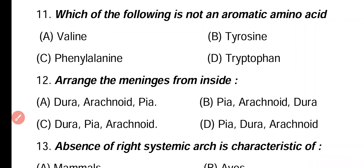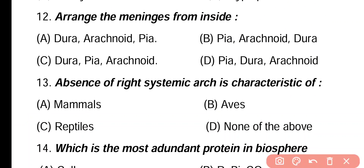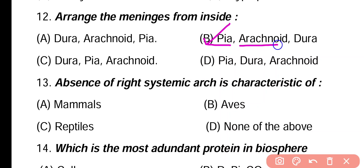Question 12. Arrange the meninges from inside: dura outside, arachnoid, then pia; pia, arachnoid, dura; dura, pia, arachnoid; pia matter, dura matter, arachnoid. Correct answer is option B. The innermost meningeal layer is pia matter, then arachnoid matter, then dura matter on the outside.